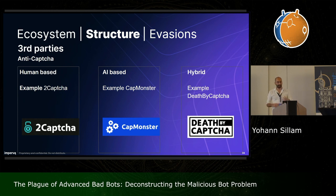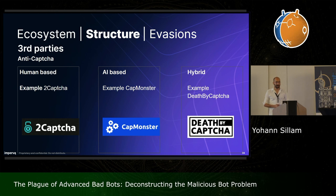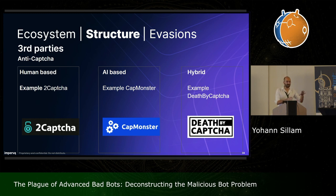The last key component is integration with third parties. The first is anti-captcha challenges. There are a few categories: human-based captcha solving, where companies hire people to manually solve captchas like 2captcha; AI-based solutions, for example CapMonster; or a combination of both — Dead by Captcha, for example, first tries to programmatically solve the captcha, and if it fails, asks a human to do it.